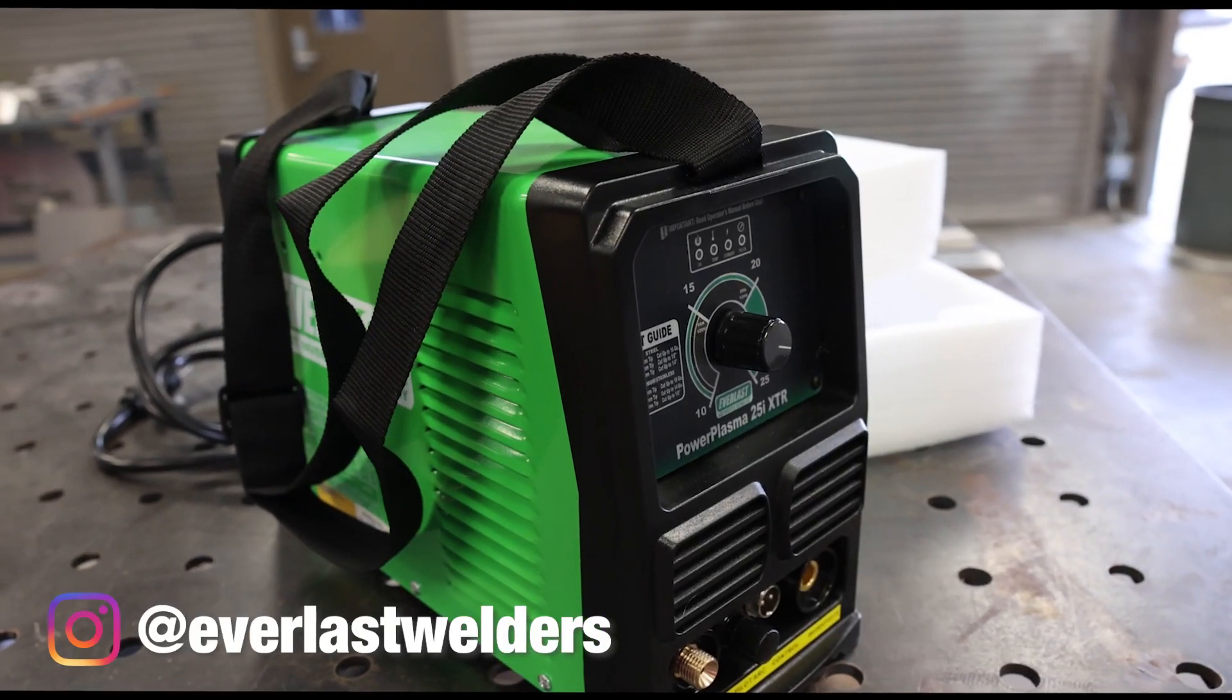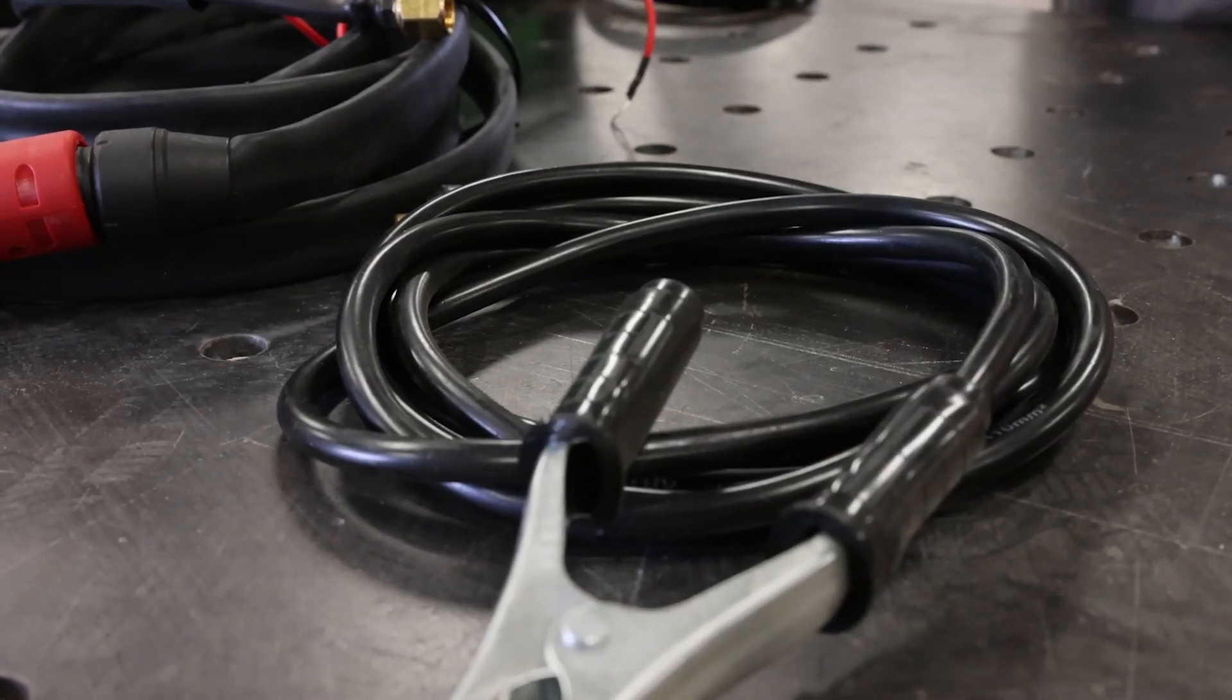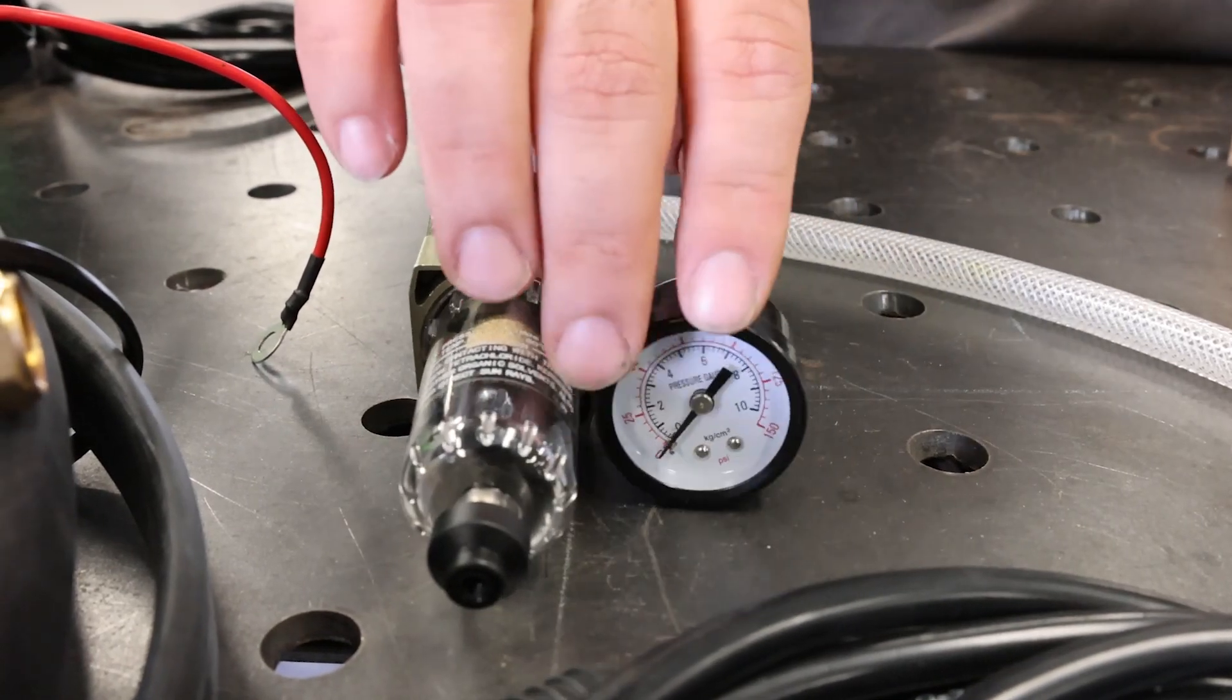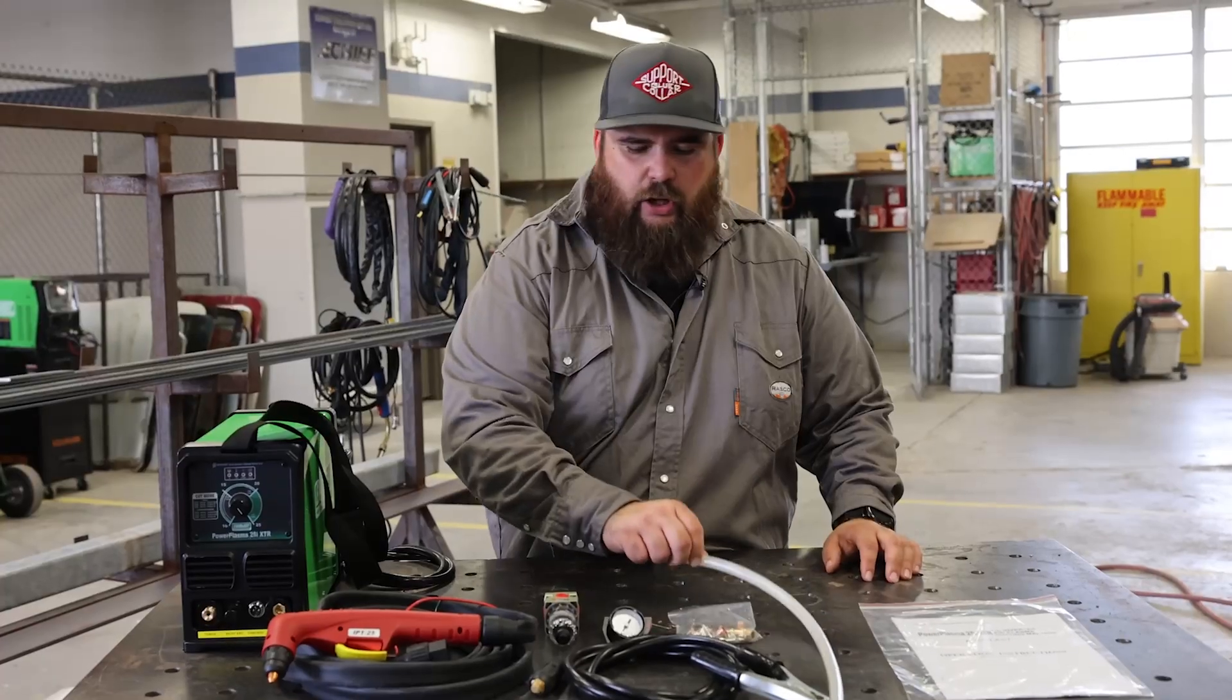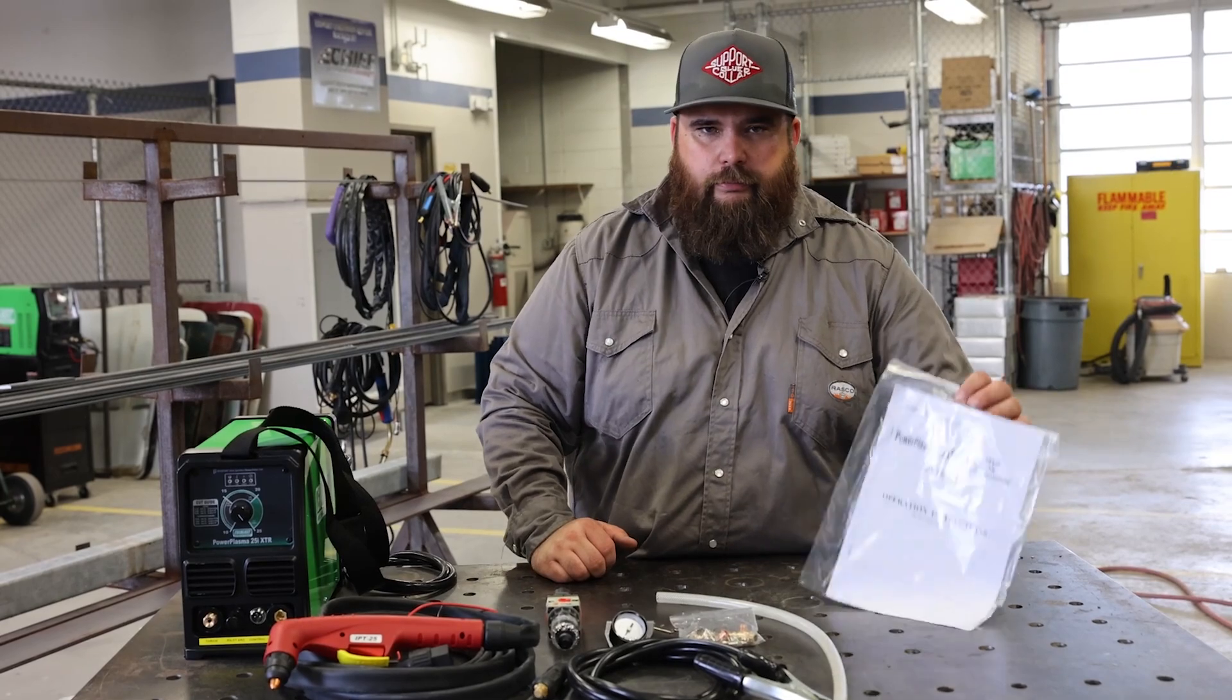Alright guys, we have the unit open. It comes with a 25 amp torch, your workpiece lead, a regulator and water separator, and a pressure indicator. It comes with consumables and a tool for consumables, and this is a hose for hooking up the air system for it and then manual.